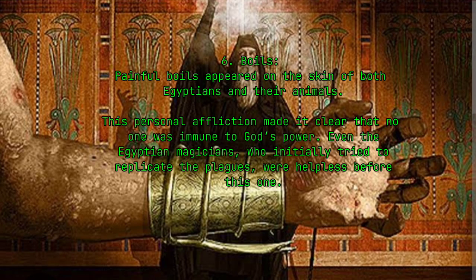6. Boils. Painful boils appeared on the skin of both Egyptians and their animals. This personal affliction made it clear that no one was immune to God's power — even the Egyptian magicians, who initially tried to replicate the plagues, were helpless before this one.